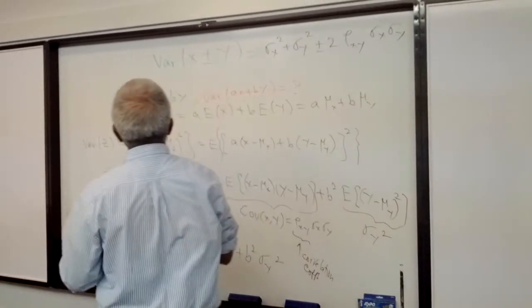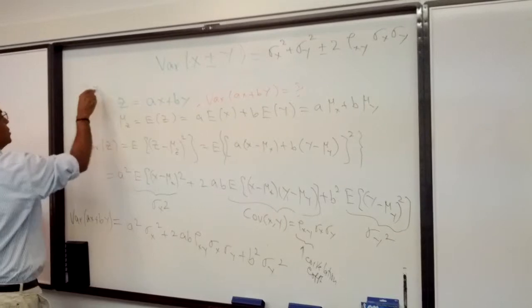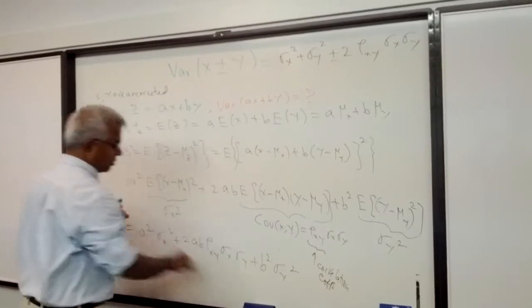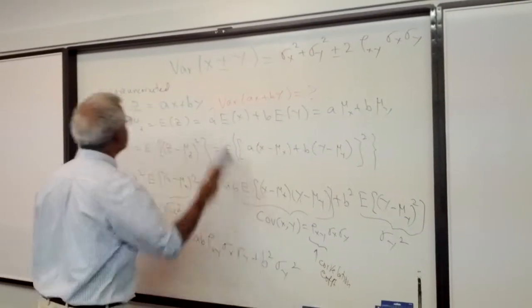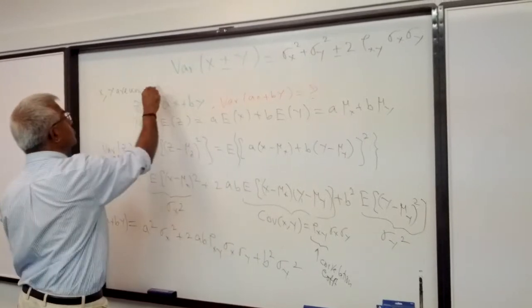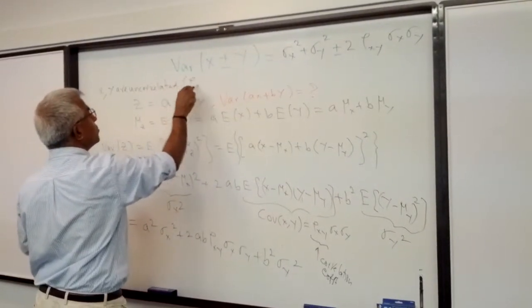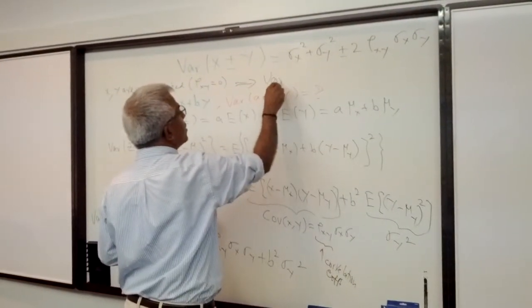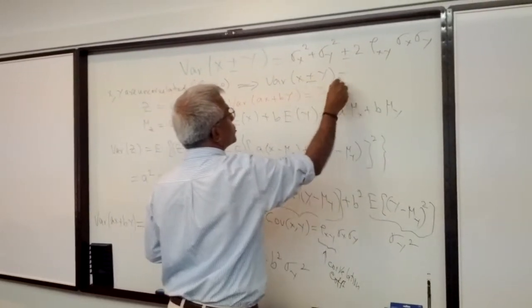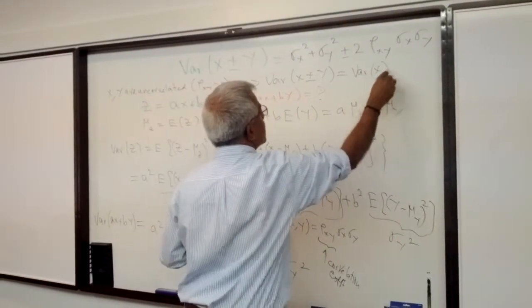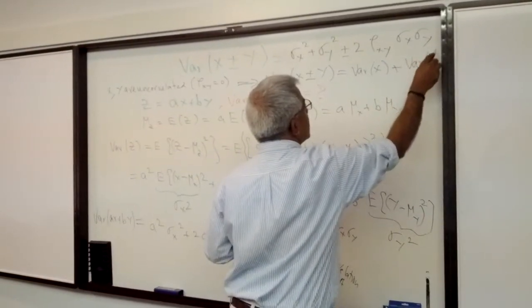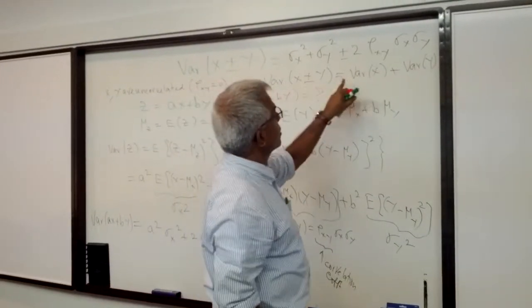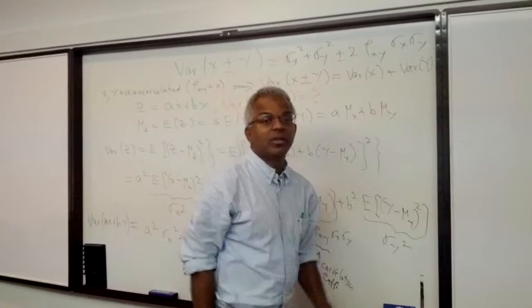Now an interesting special case is suppose X and Y are uncorrelated. Remember uncorrelated means Rho is 0. So that means Rho XY is 0. So if you put Rho XY equal to 0, you get that variance of X plus Y or X minus Y is simply variance of X plus variance of Y. So the interesting thing is sum or difference of two random variables which are uncorrelated: its variance is the sum of the variance of X and Y.